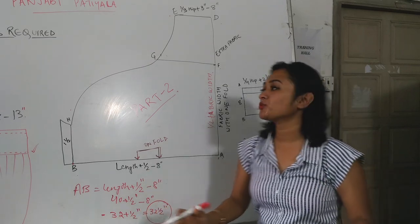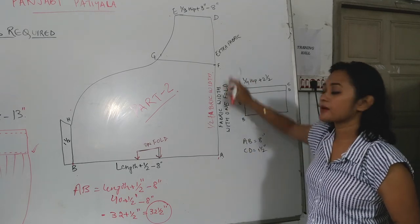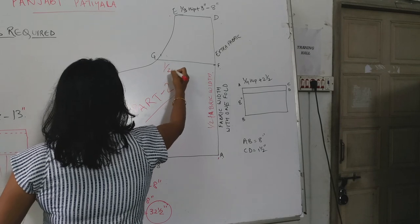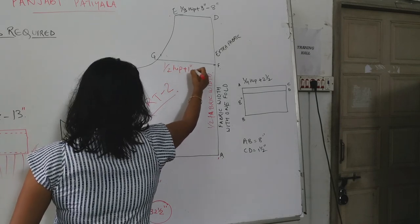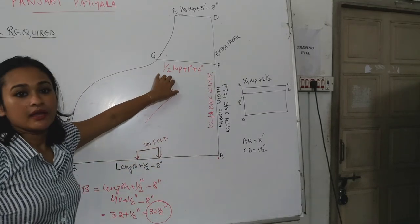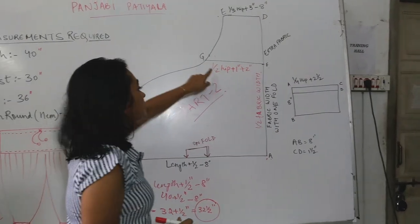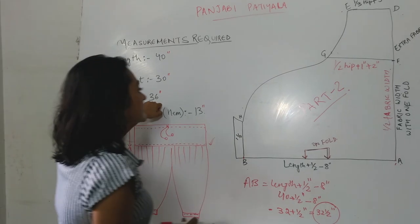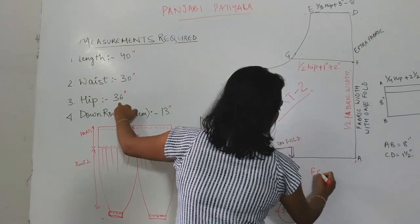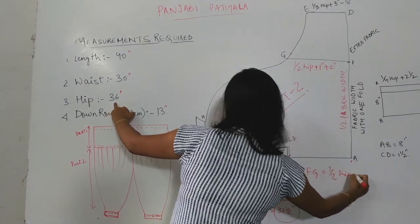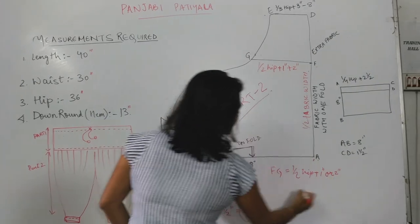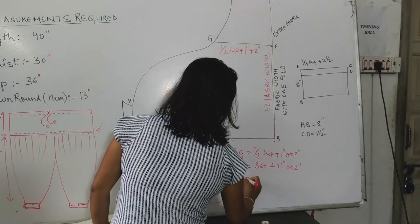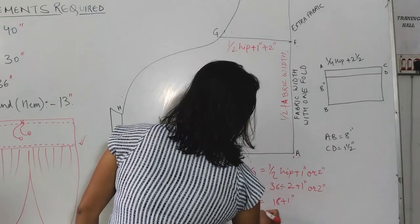This is A-M-F — it is a half fabric width. After this, we will draw F-G. F-G is half hip plus 1 inch or 2 inches. Half hip is here — we will find this G point. The formula is half hip plus 1 or 2 inches. That means, if my hip is 36: 36 divided by 2 plus 1 inch or 2 inches. That means 18 plus 1 inch equals 19.